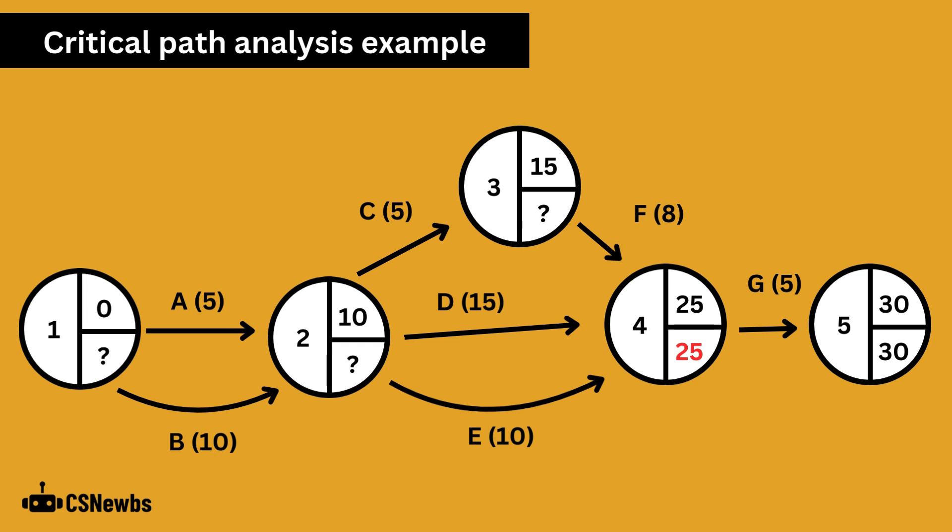Each time we take the largest time away from the latest finish time. There's only one activity between nodes 5 and 4, so 30 minus G's five days gives 25 days.